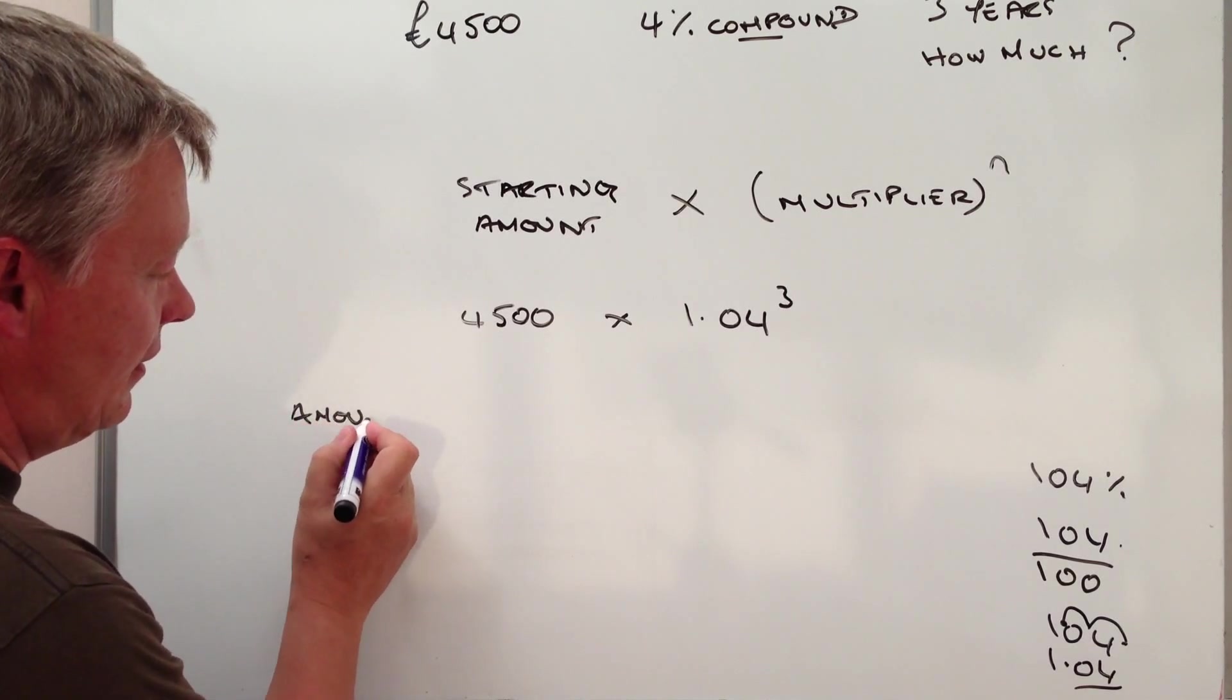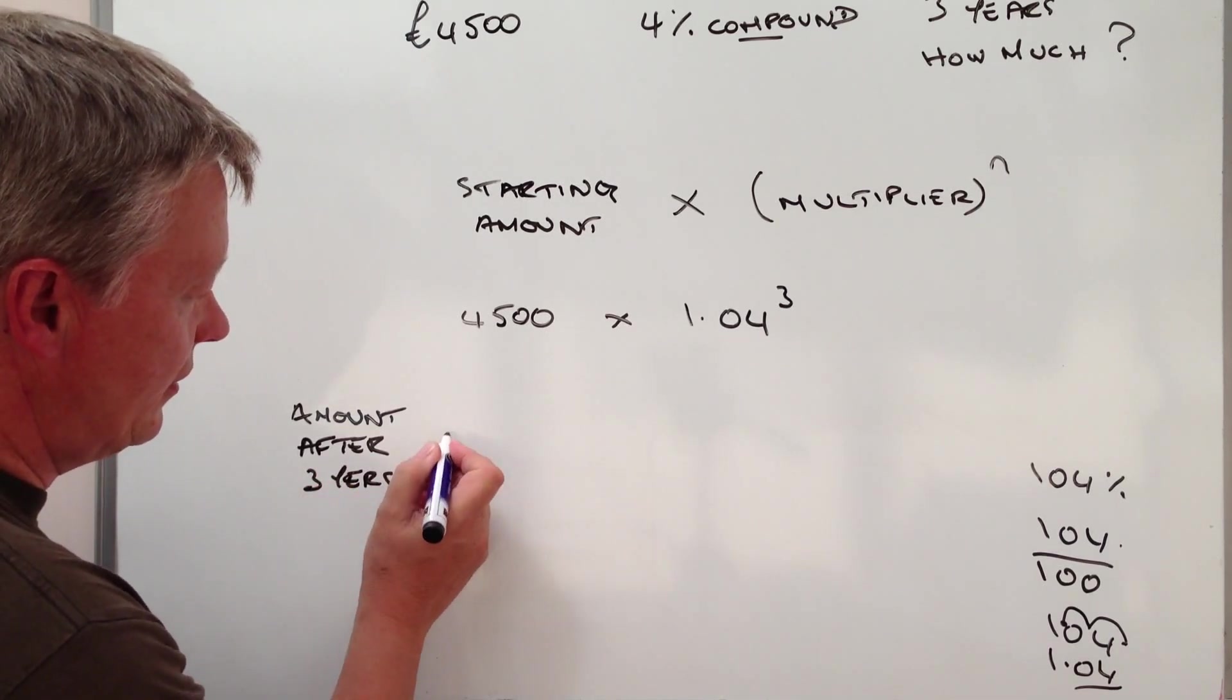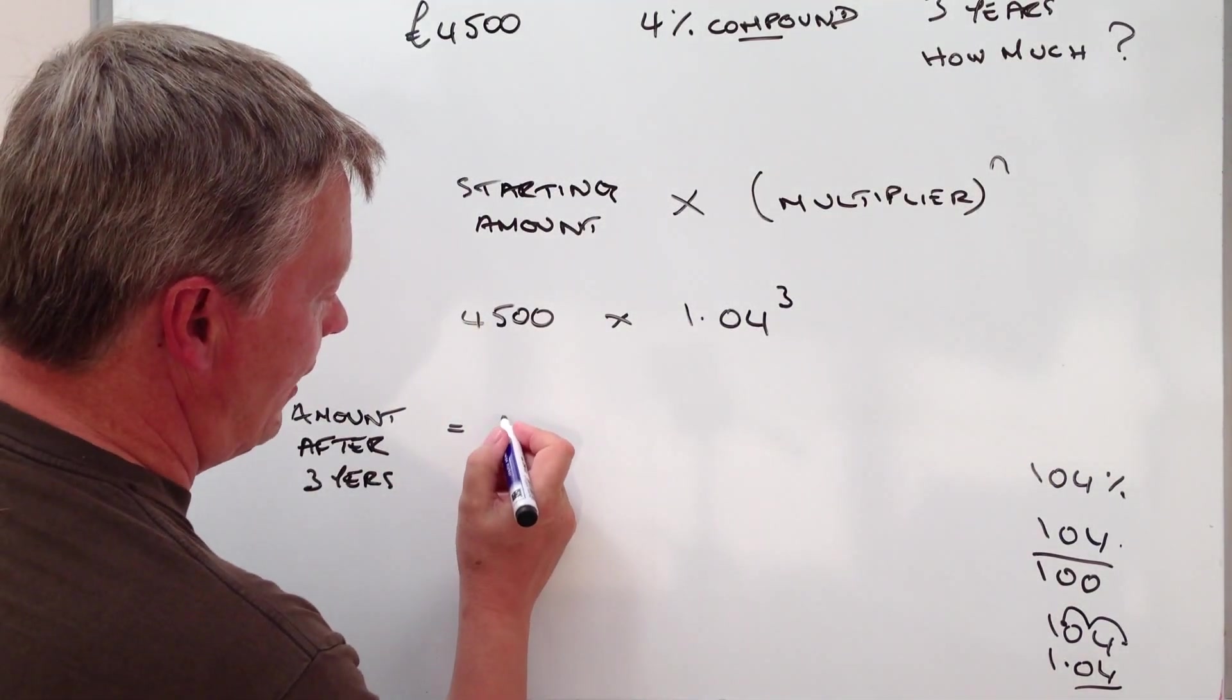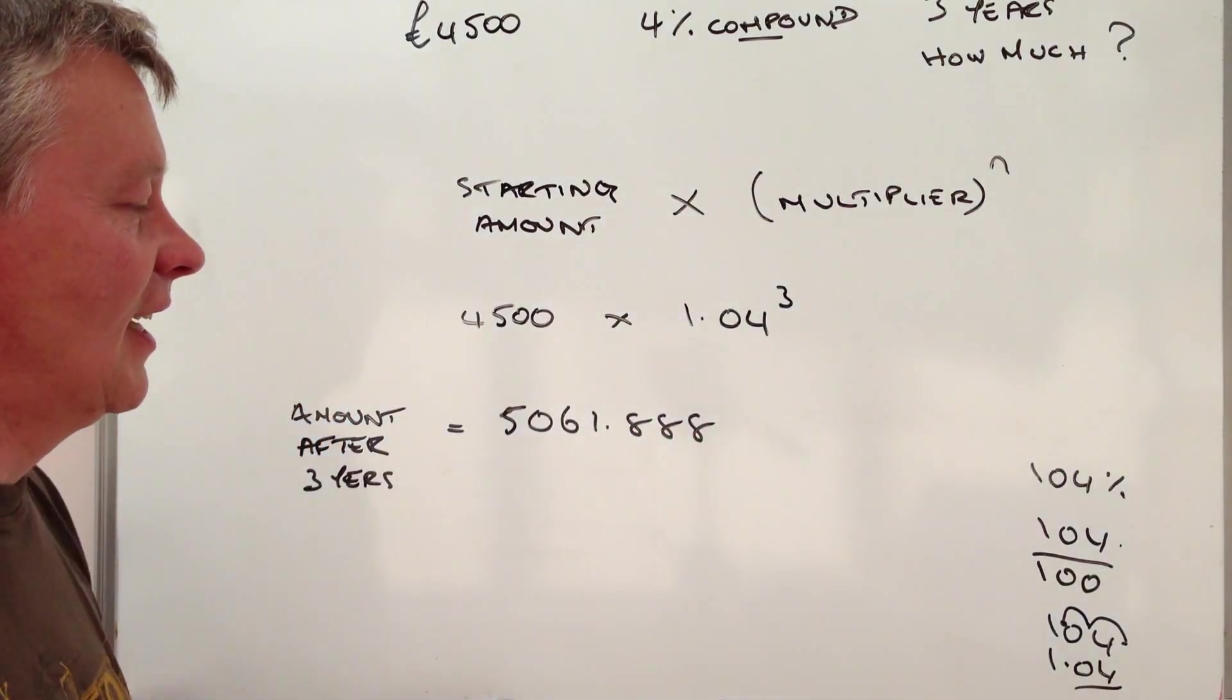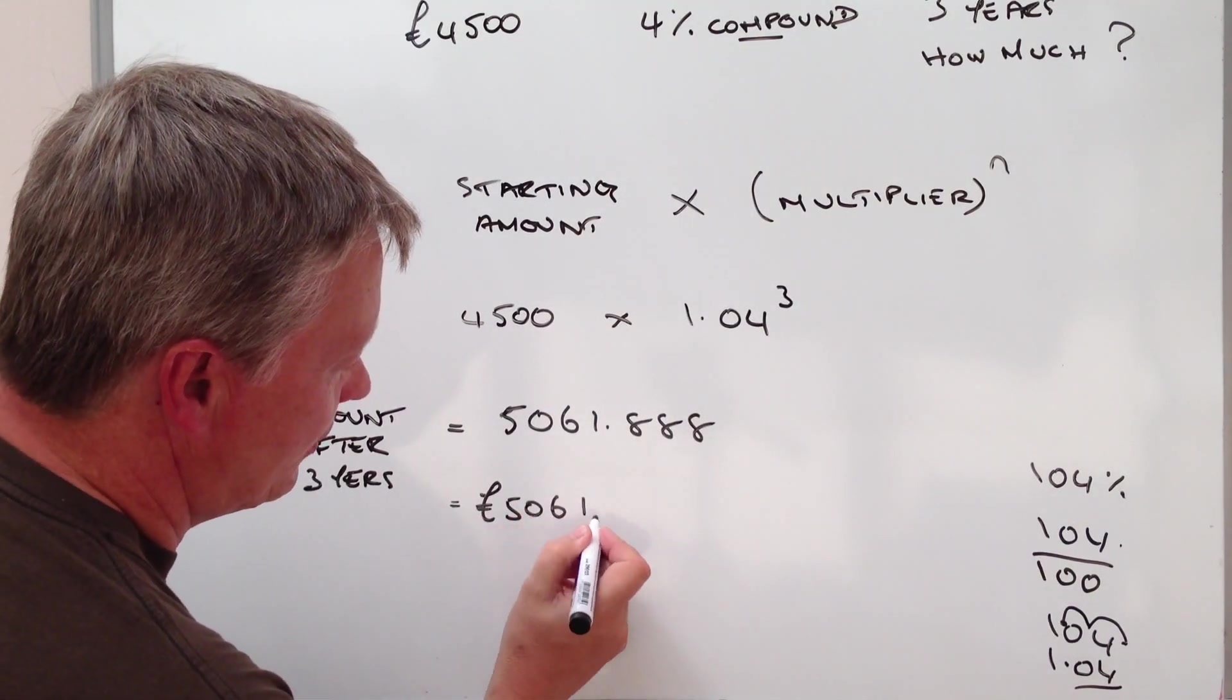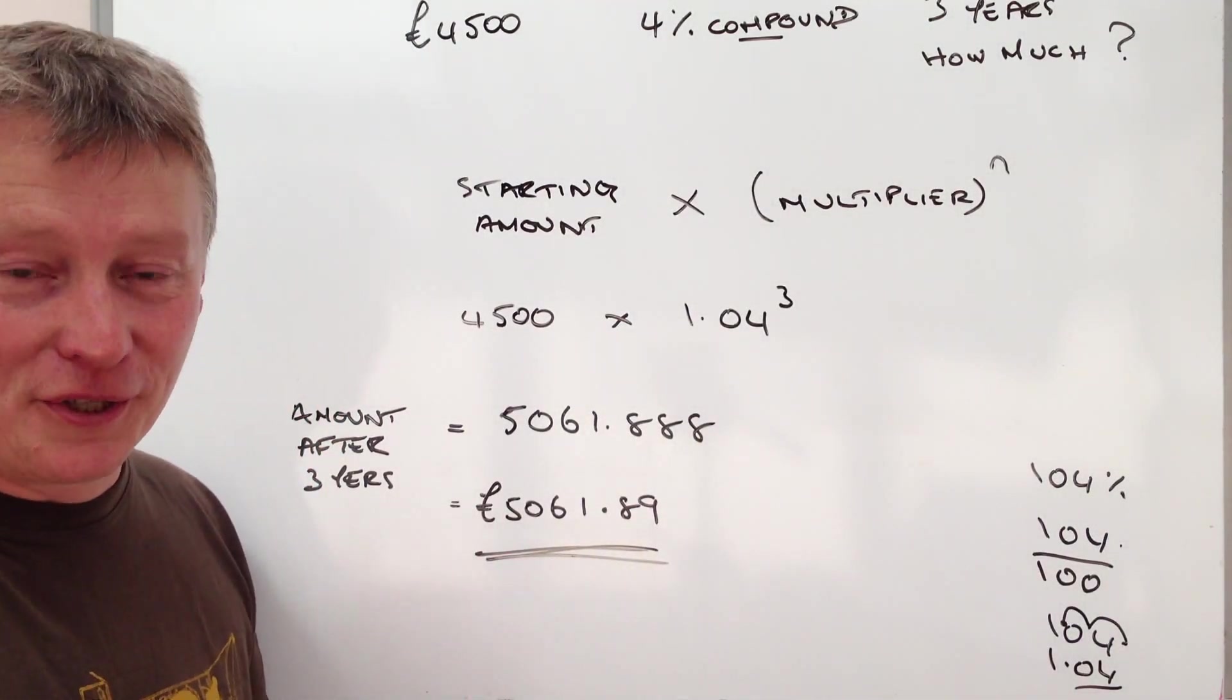So the amount after three years is going to be equal to 4,500 times 1.04 to the power of three. And that's going to give me a grand amount of 5061.88. And if I round that to two decimal places, that's going to be £5,061.89, which I think is the same number that we came to when we used the table before.